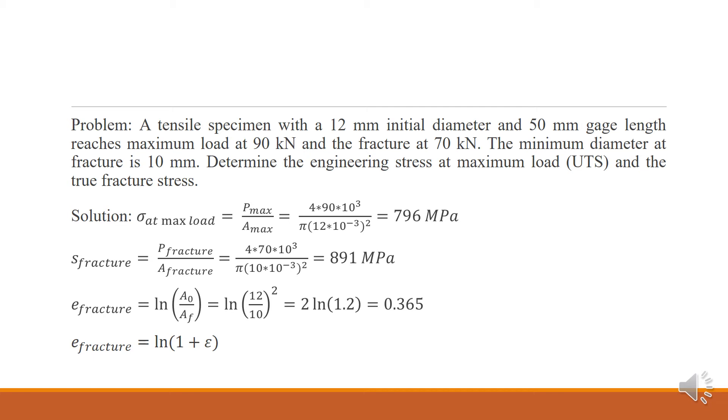True strain is given as ln of original or initial cross-sectional area by cross-sectional area at fracture. And if you calculate, you will get 0.365, that is your true strain.